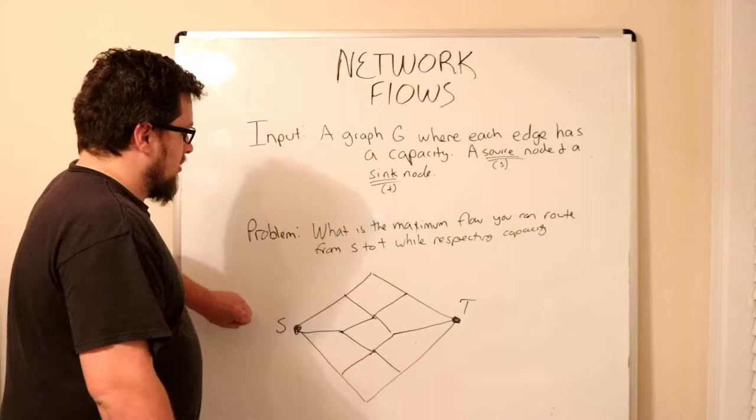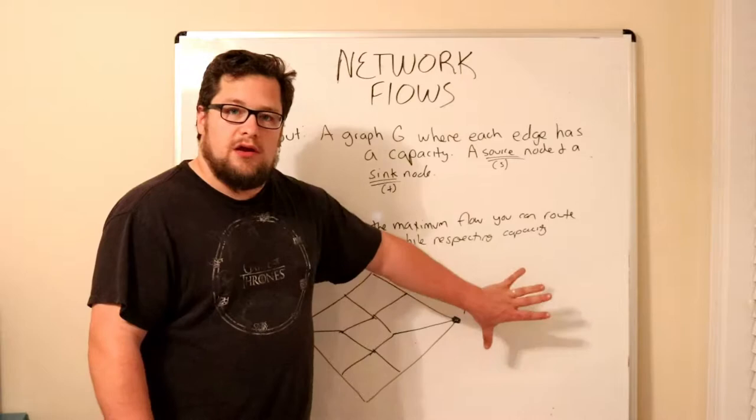You've got so much water coming down the main water line. Each pipe at a certain point maybe can only hold so much capacity, but we need to see how much we can actually get to the end. How much water can we push through in a grid or a graph like this and what pressure are we going to get on the way out?